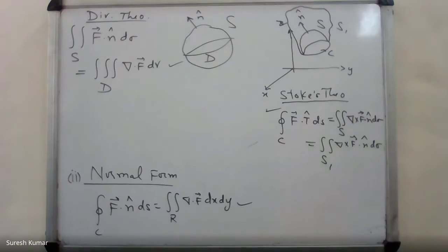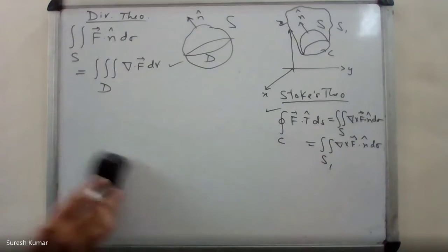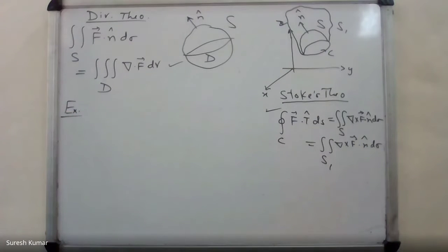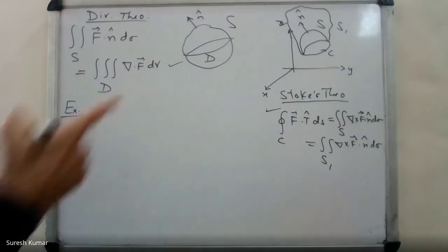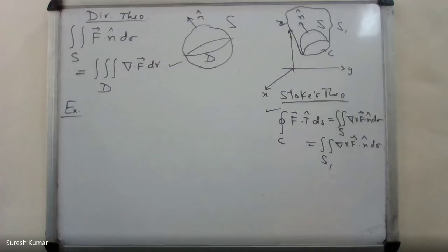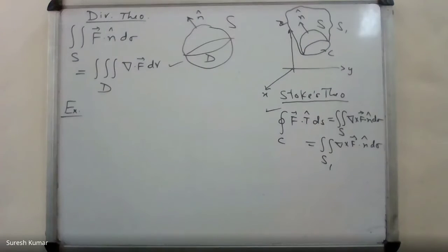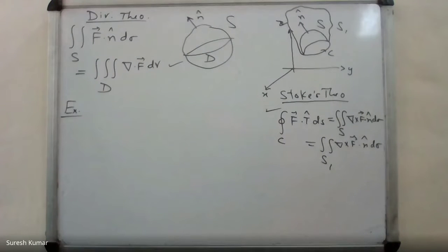Before doing problems, note that in the Divergence theorem it is an oriented closed surface and n-hat is the outward pointing unit normal vector. In Stokes' theorem, it is an open surface with boundary C. So Stokes' theorem is applicable on an open surface with boundary C, while the Divergence theorem is applicable on a closed surface. Let us do a problem on Stokes' theorem first. Verify Stokes' theorem.